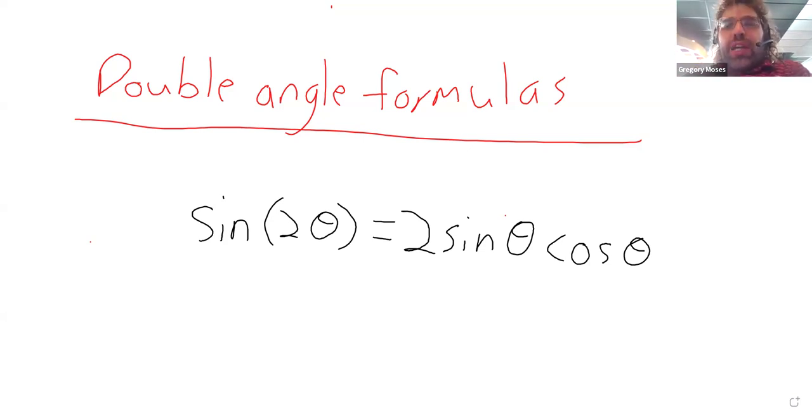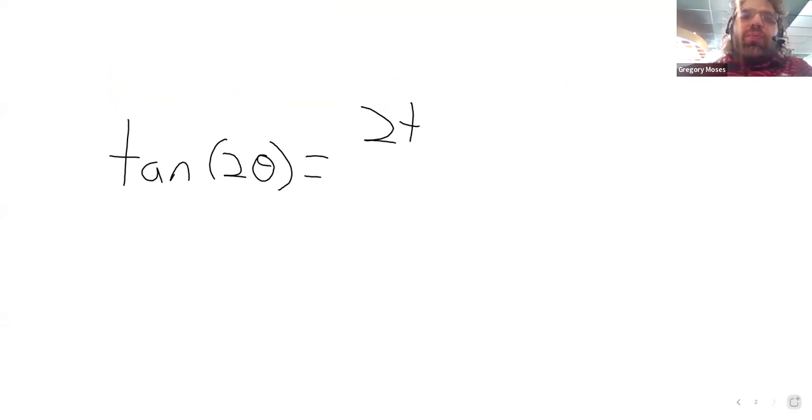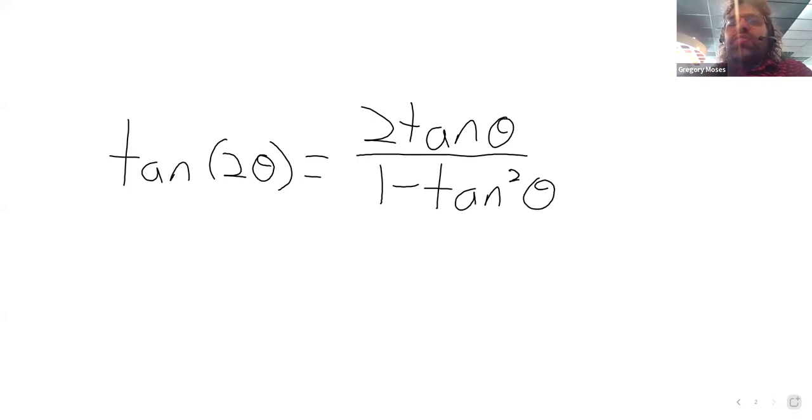The other double angle formulas, there are two more, one for the cosine and one for the tangent. I'm going to go not in the order you would probably predict. I'm going to give the formula for the tangent next. It's twice the tangent divided by one minus the tangent squared.